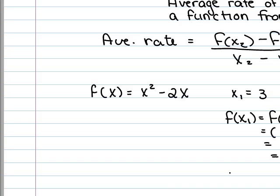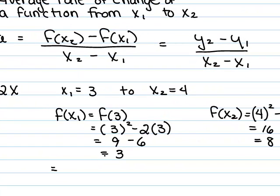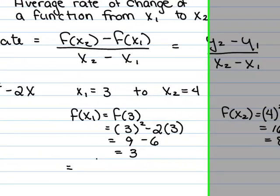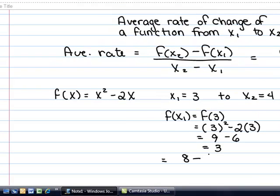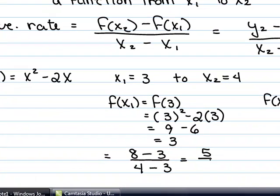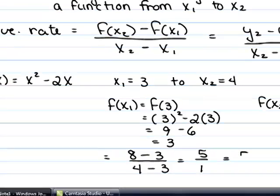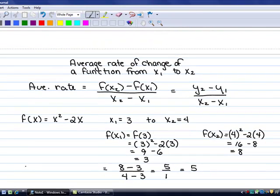You had to compute your y values before you could find this rate of change or this slope. So the average rate of change is f of x sub 2, which is the number 8, minus f of x sub 1, which is the number 3, divided by x sub 2 minus x sub 1. So you end up with 5 over 1, or 5 as your average rate of change.